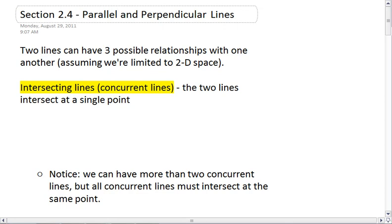In Section 2.4, we're going to look at the relationship between two lines. And if we have two lines, we have three possible relationships between those. Assuming, of course, that we're limited to a 2D space.